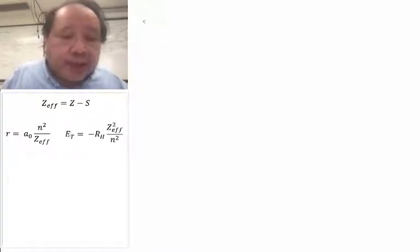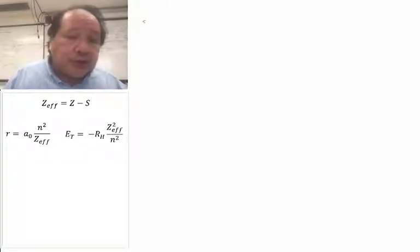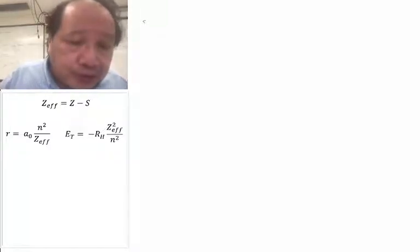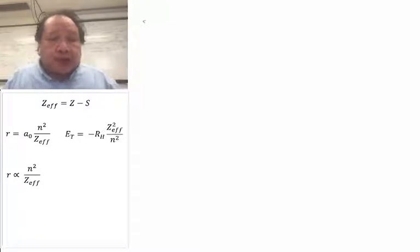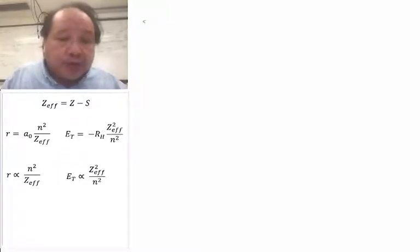The total energy is minus R_H Z_eff² over N². And these relations are very often best used as proportionalities. R is proportional to N² over Z_eff, and E_total is proportional to Z_eff² over N².